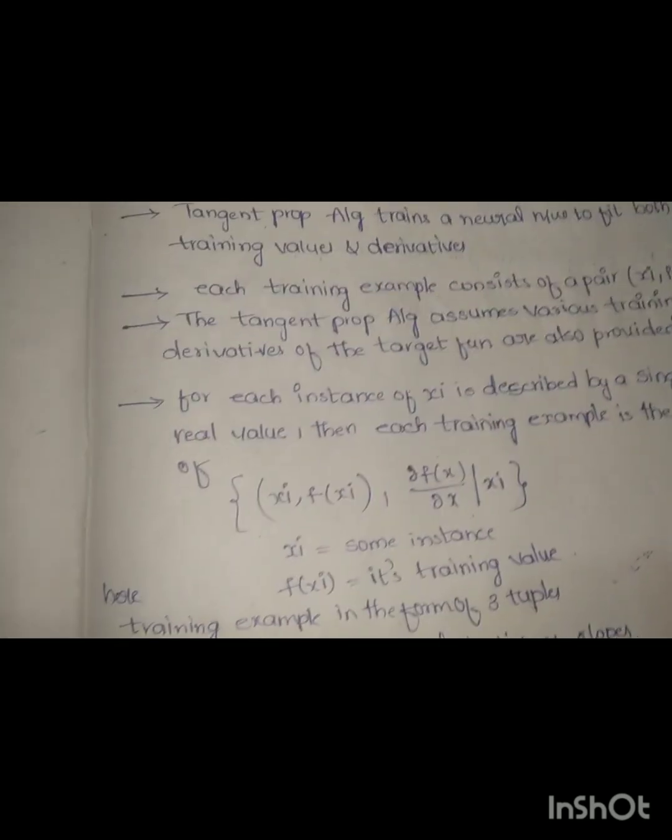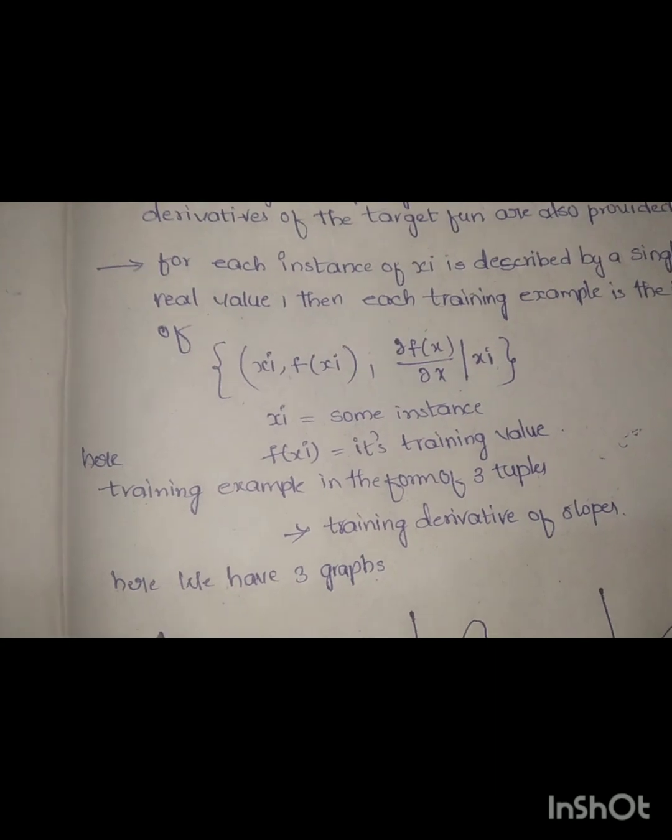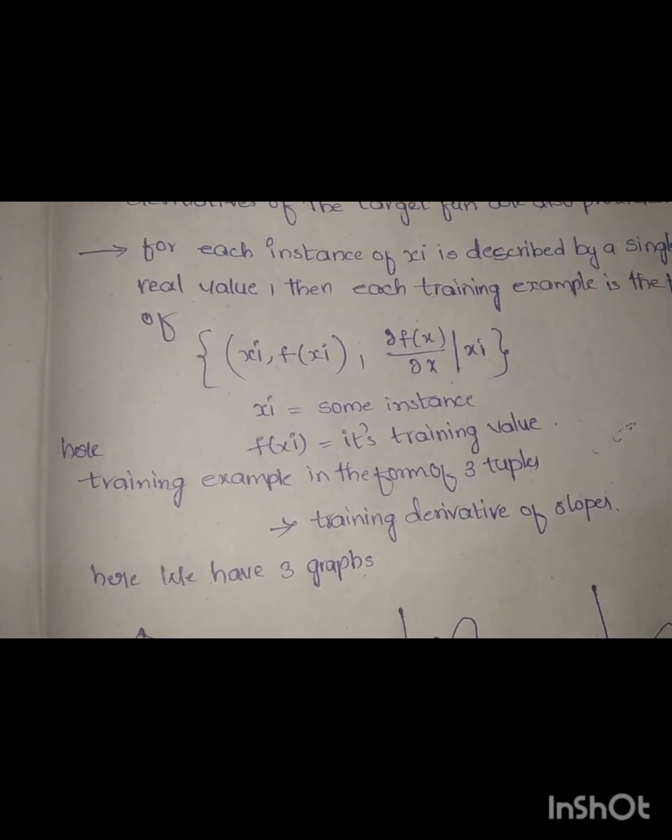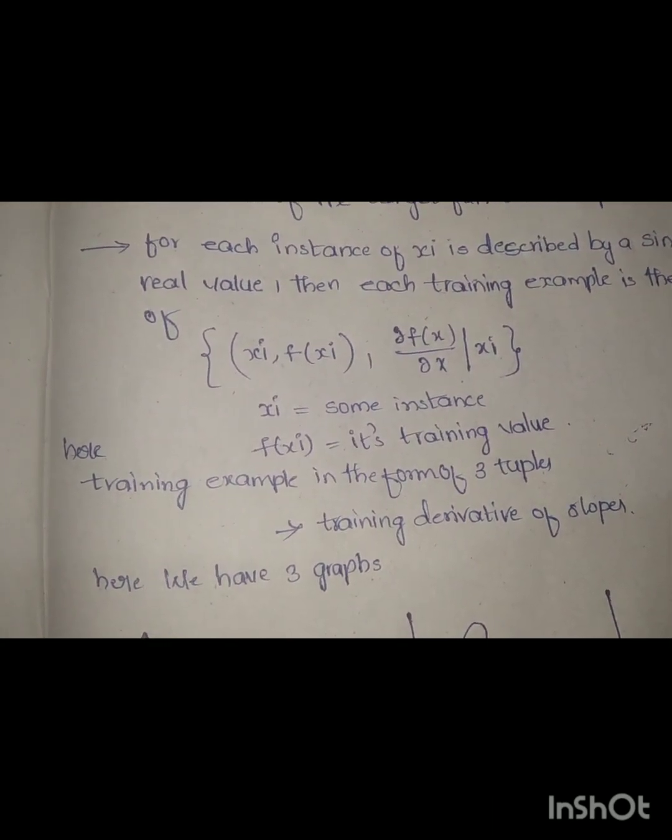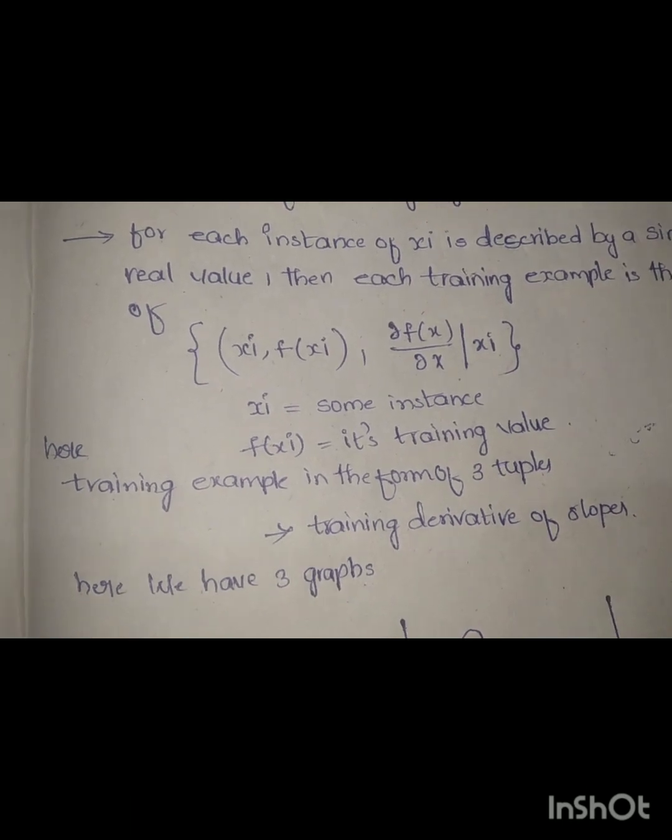is the derivative. Here the training example is in the form of three tuples: instance, training value, and training derivative.